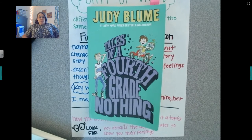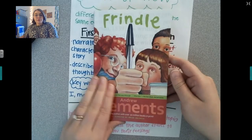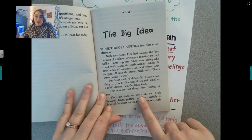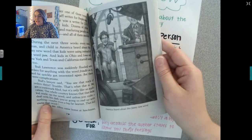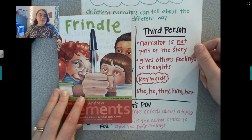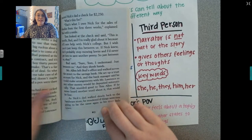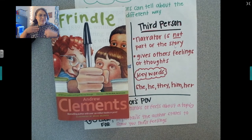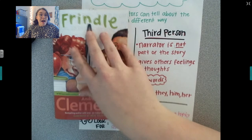So Tales of a Fourth Grade Nothing is first person and the narrator is Peter because Peter is in the story. Now let's take a look at Frindle. In Frindle, we have 'Nick and Janet had missed the bus. They got back on the curb. Nick followed Janet.' There are a lot of names in this book. This book is actually third person — the narrator is not a part of the story. Nick is being talked about; it says his name, Nick, a lot.